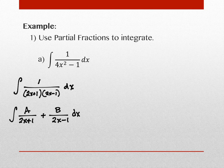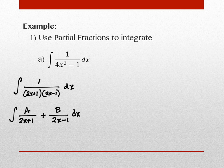So steps two through four were all really fast: we factored, wrote it as a summation, and wrote the numerators as constants A and B. Finding those constants is the bulk of the process. Reconciling the fractions means combining them back together. We take the first fraction and multiply its denominator by (2x − 1), and the second by (2x + 1), to get a common denominator and push them back together.